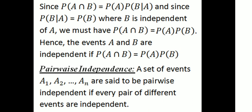Then we have: probability of A intersection B equals probability of A into probability of B given A. Since A and B are independent, P(B|A) = P(B), so probability of A intersection B equals probability of A into probability of B. Hence, events A and B are independent if P(A ∩ B) = P(A) · P(B).